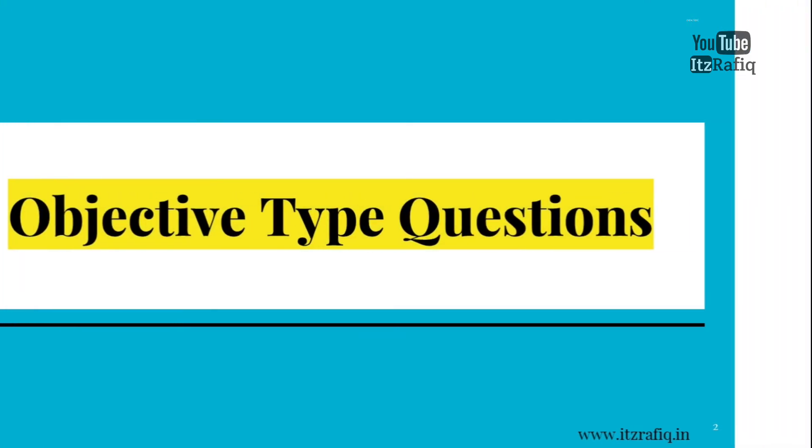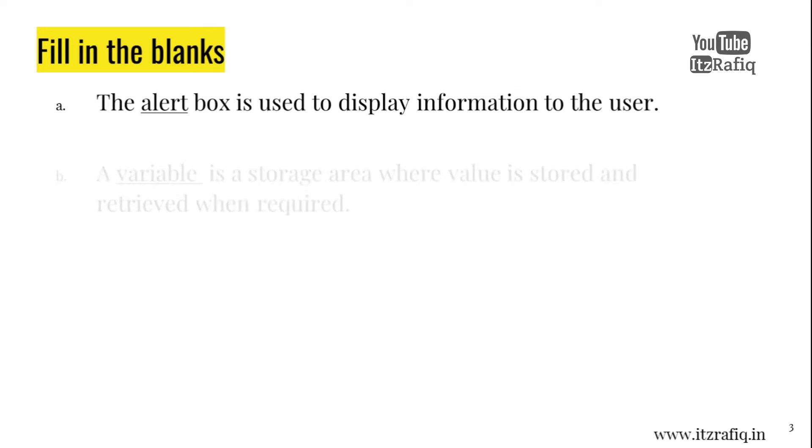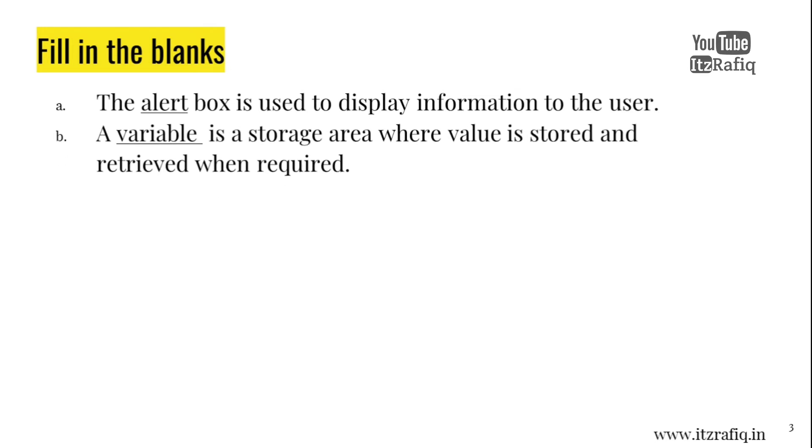Objective type questions, fill in the blanks. A. The alert box is used to display information to the user. B. A variable is a storage area where value is stored and retrieved when required.